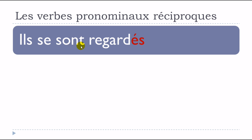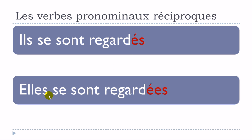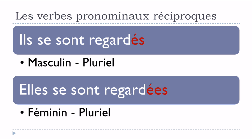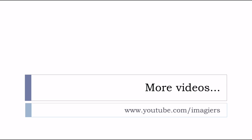For the passé composé with réciproque verbs, since we use être, we add feminine and plural endings: ils se sont regardés (plural -s), elles se sont regardées (feminine -e + plural -s). These endings are not pronounced — regardé, regardée, regardés, regardées all sound the same phonetically. But write them correctly. Masculine pluriel and féminin pluriel — have a great day, au revoir et à bientôt.